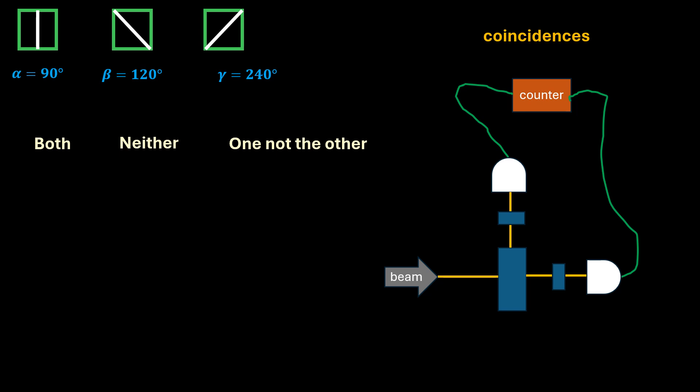That is, the number of times signals from both detectors reach it, which means the number of times photons pass through both detectors. If the counter receives a signal from one detector but not the other, it will not record any count. Likewise, if you don't send in any photons, which is the same thing as saying no photon goes through both filters.